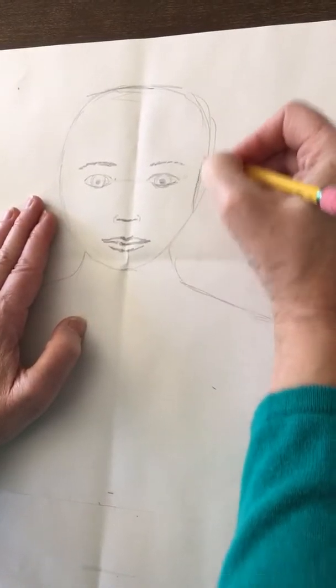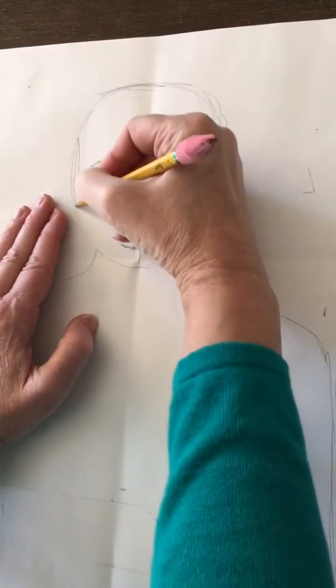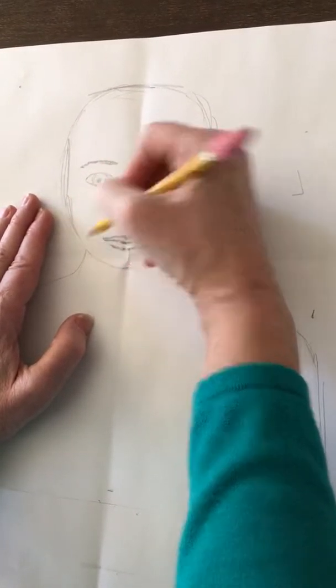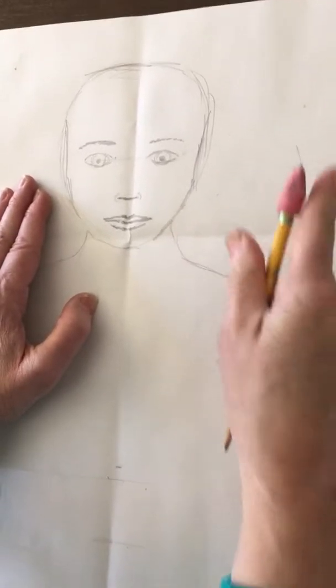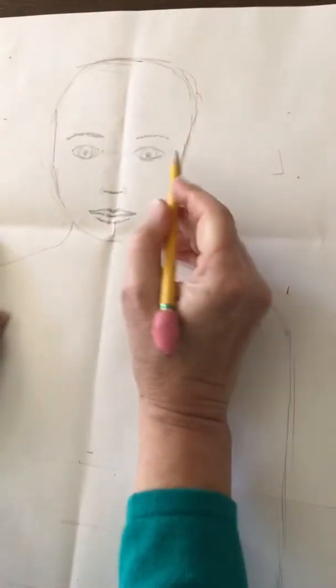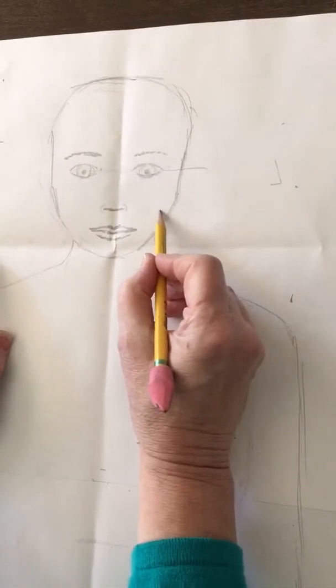Okay, so I'm going to take a little bit off of here, a little too wide there. Refine that line of the cheeks a little bit more. And our ear shape starts at the eye and ends at the nose.